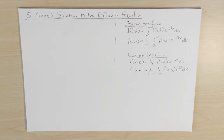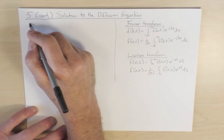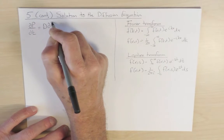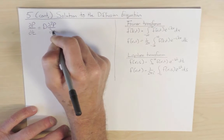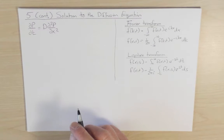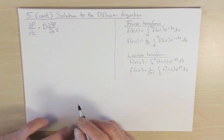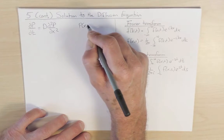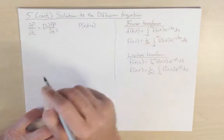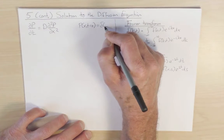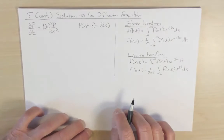Let's now solve the diffusion equation in one dimension. The equation we want to solve is dp/dt equals D times the second partial derivative of p with respect to x squared. To have a well-posed problem we need to specify an initial condition. The simplest choice is that at t equals zero the random walker is at the origin, encapsulated by p(x, t=0) equals a delta function of x.